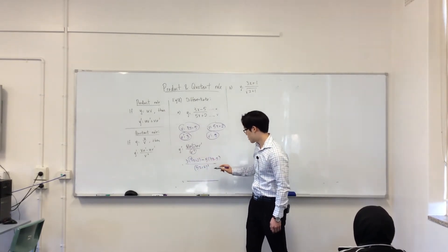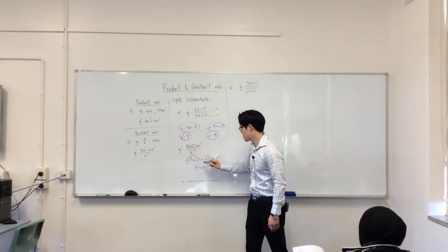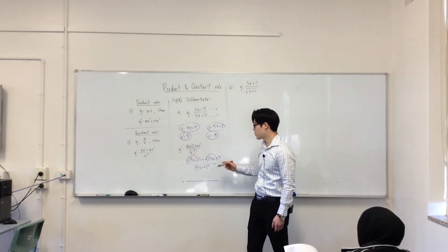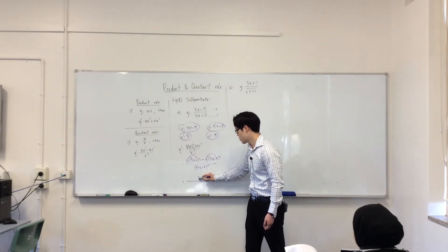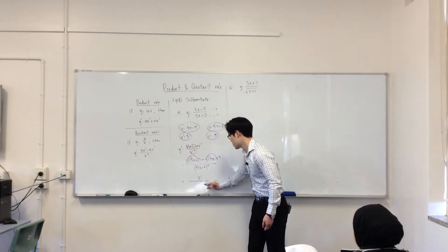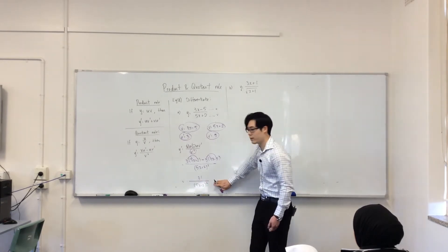So, 15x, take away 15x. Nothing. 6 plus 25, because minus times minus is plus. What's that? 6 plus 25? 31. So, it's just this. Seems simple enough.